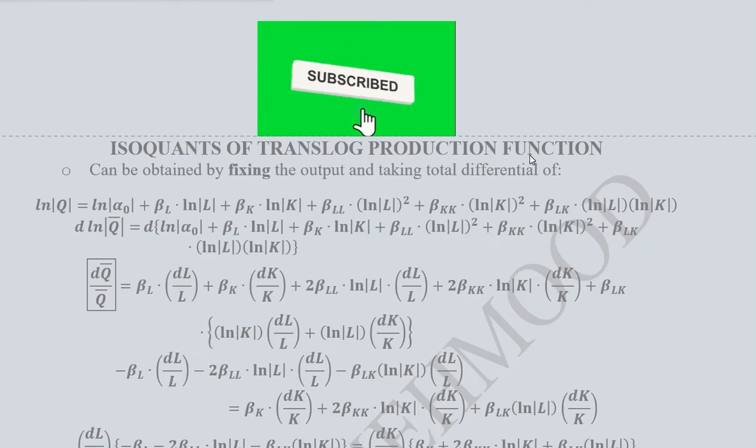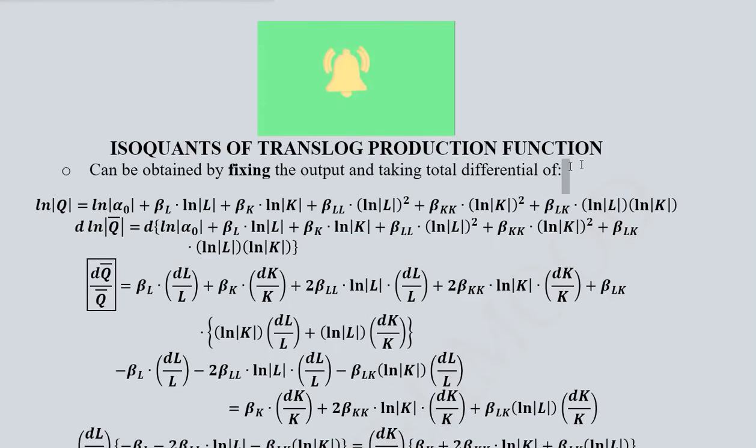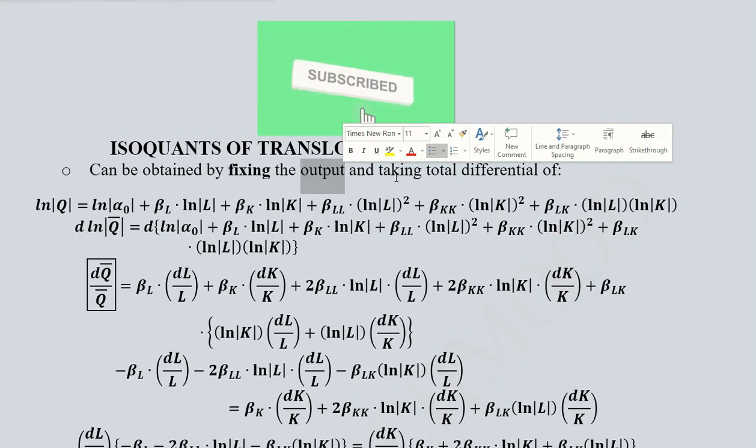So we are talking about the isoquants of the translog production function. It should not come as a surprise because just like any production function, the translog production function should also have isoquants. How can we obtain these isoquants? We can fix the output, just like in any isoquant we have a fixed level of output.